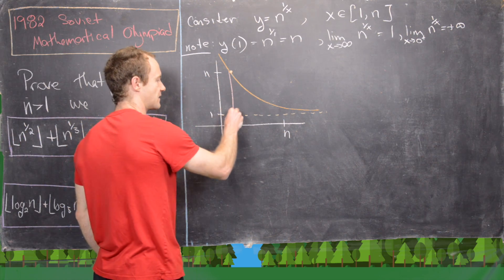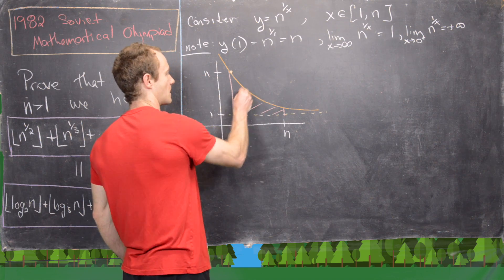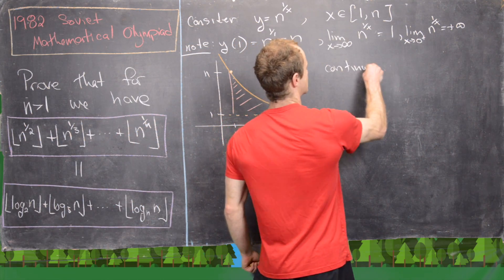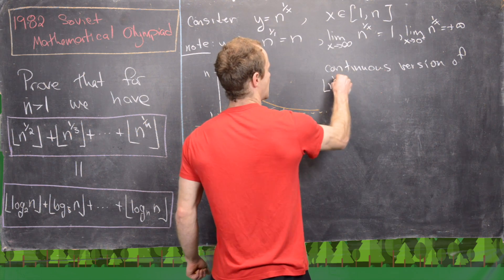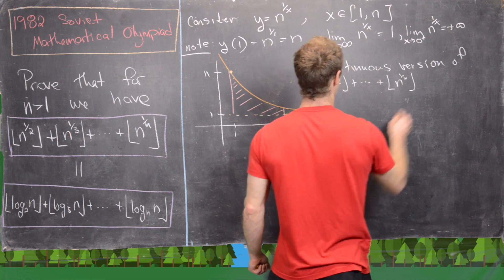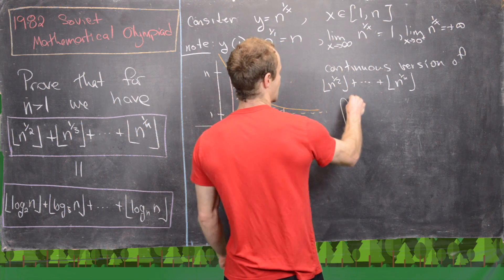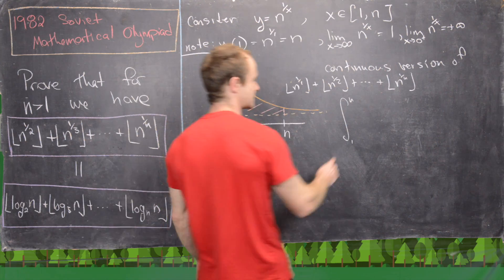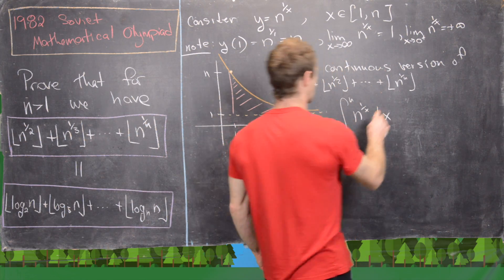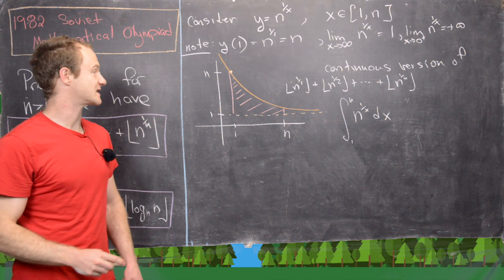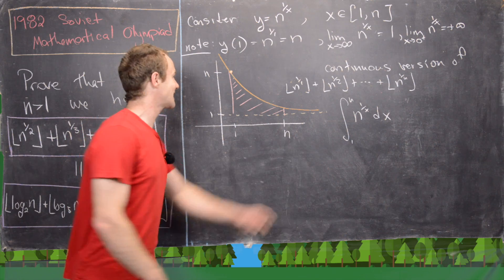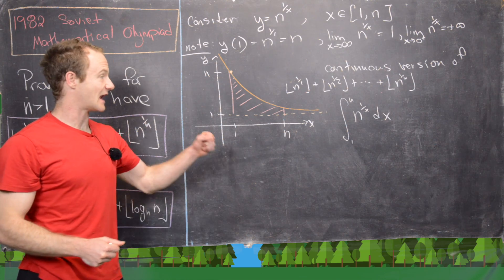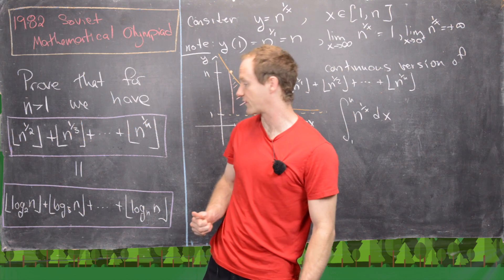We can represent this area as the integral from 1 to n of n^(1/x) dx — including n^(1/1) at the front since we're expanding the range. Now the next thing we want to do is instead of integrating along the x-axis, integrate along the y-axis and see what we get. We expect to get something closely related to the right-hand sum.